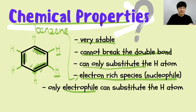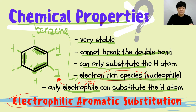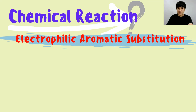Since your benzene ring is an extremely electron-rich species, it is a nucleophile. Therefore, only an electrophile can substitute the hydrogen atom, because an electrophile is an electron-poor species that will go find the electron-rich benzene ring. So bear in mind: only an electrophile can replace the hydrogen atom sitting on the benzene ring. As a result, benzene can only undergo electrophilic aromatic substitution.